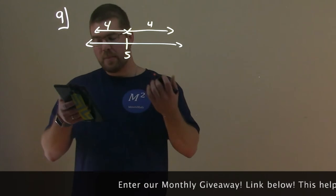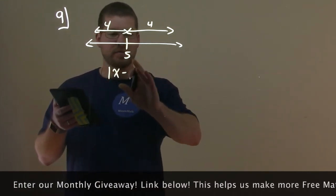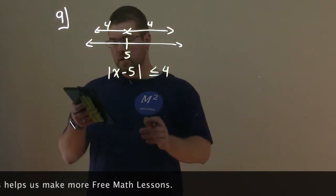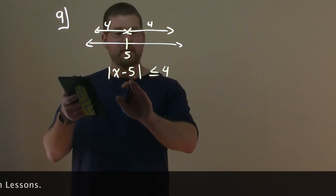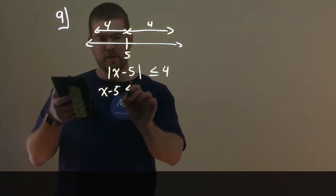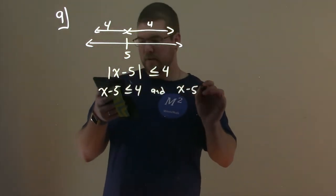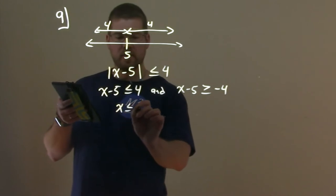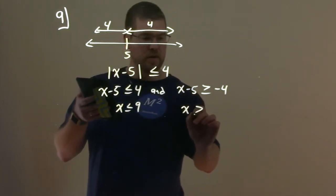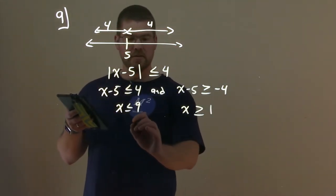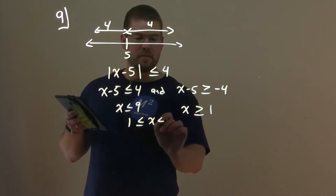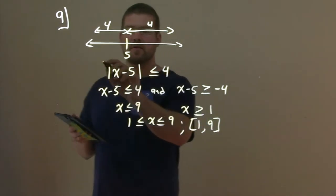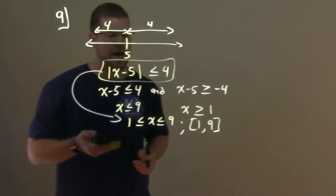So if I want to write that as an absolute value inequality, we would say absolute value of x minus 5 is less than or equal to 4. We can separate that as x minus 5 is less than or equal to 4 and x minus 5 is greater than or equal to negative 4. Solving each one by adding 5 to both sides: x is less than or equal to 9 and x is greater than or equal to 1. So x is between 1 and 9, written as 1 ≤ x ≤ 9, or in interval notation: [1, 9].